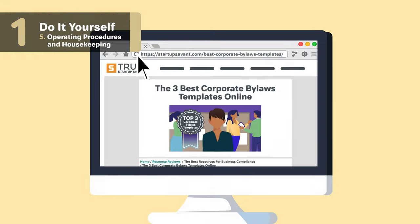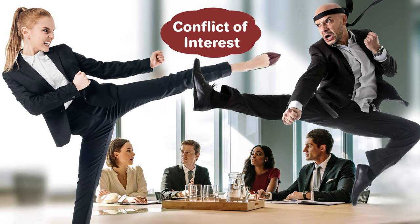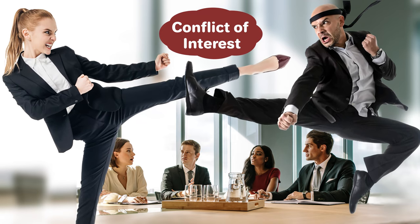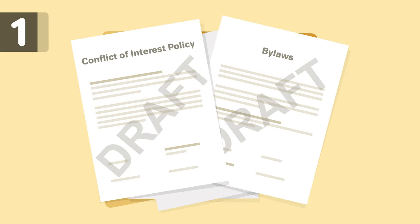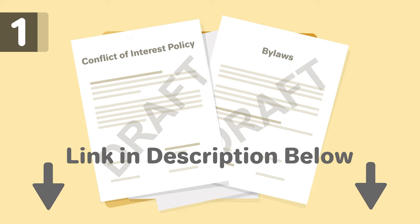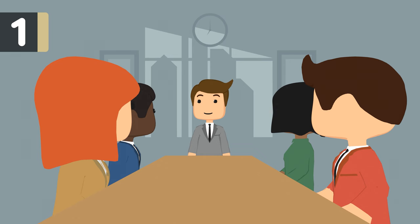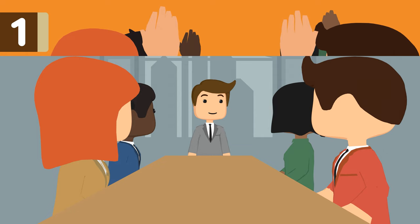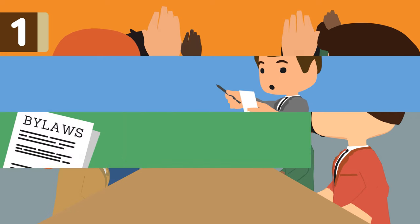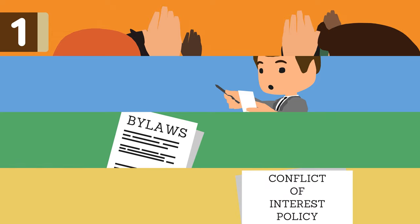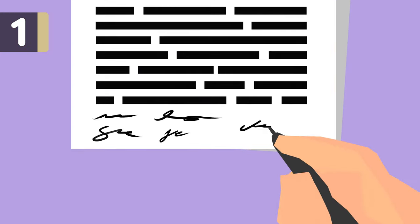When you're ready to get started, check out some bylaws templates linked in the description below. The conflict of interest policy sets rules to ensure that decisions made for the nonprofit are based on what is best for the organization and not motivated by what is best for individuals. You'll want to have a draft of both the bylaws and conflict of interest policy before your organizational meeting. An organizational meeting is the first official meeting of your nonprofit. Topics typically discussed include taking attendance to show you have a quorum, appointing temporary officers and chairman, adoption of bylaws, and adoption of the conflict of interest policy. It's important to record minutes of the meeting and have it signed by all attending directors.